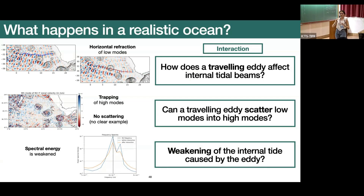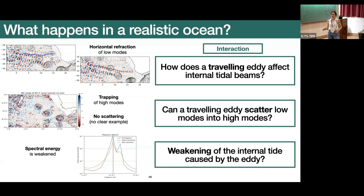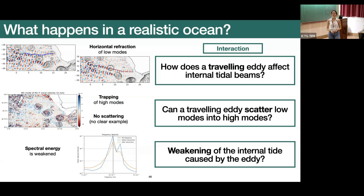Audience question: Do you see preferential trapping in anticyclones versus cyclones? Response: In this case we only have anticyclonic eddies in the area we are looking at — taking a week-long mean, we only see anticyclonic Agulhas eddies. There could of course be a difference for cyclonic eddies rotating the other way, but in this area we don't find any. Thank you for a very nice talk.